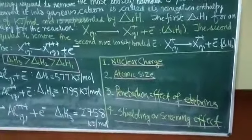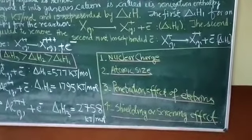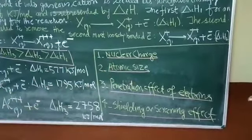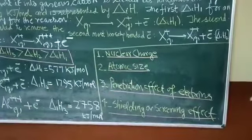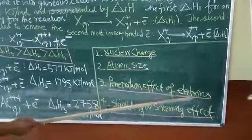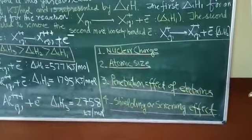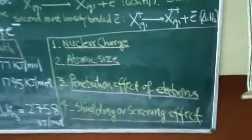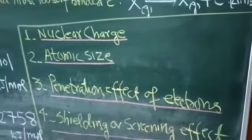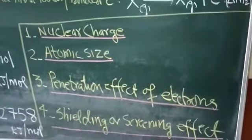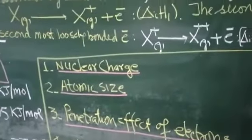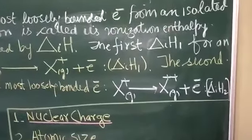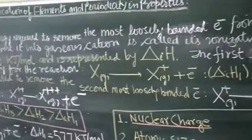I have told you two vectors: nuclear charge and atomic size. Now coming to the penetration effect of electrons. What do you understand by the penetration effect of electrons? Ionization enthalpy increases as the penetration effect of the electron increases.